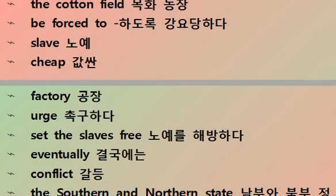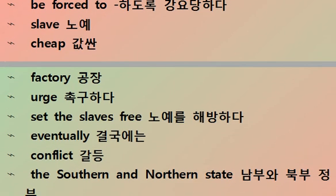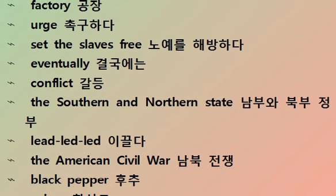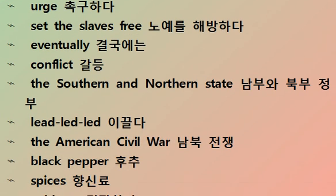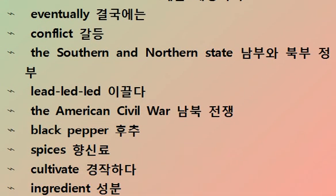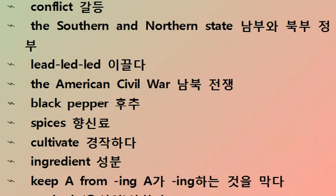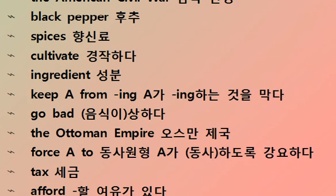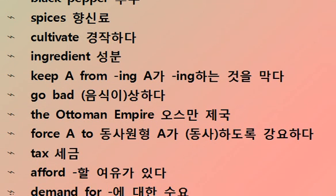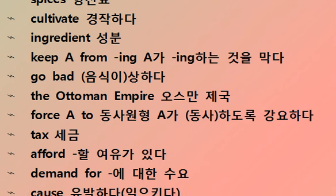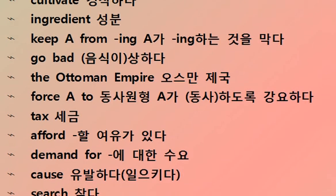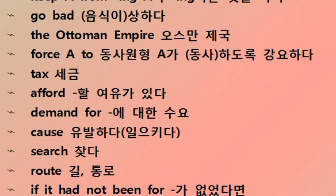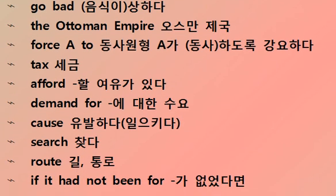Urging to set the slaves free eventually led to conflict between the southern and northern states, leading to the American Civil War. Black pepper — among the most important spices — was cultivated as an ingredient to keep food from going bad. The Ottoman Empire forced a heavy tax, making it unaffordable, increasing demand for alternatives.